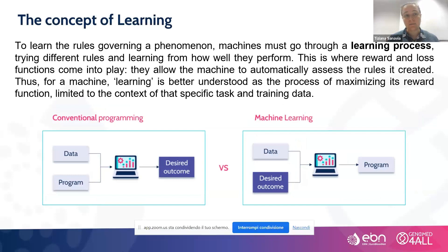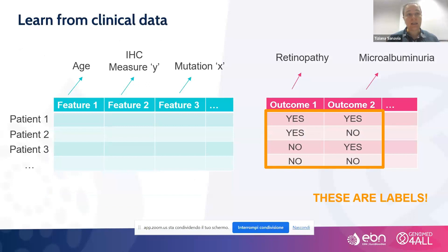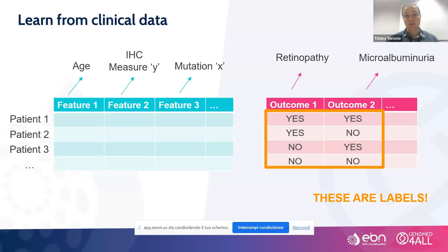In order to address this task, we have to prepare the data — in our case, clinical data — in a suitable way that can be exploited by machine learning algorithms. We have information from each patient and we distinguish two categories of clinical variables. On one side, we have the features used by the model to build the rule. On the other side, we have what we call the outcome — for example, a specific clinical event describing the prognosis of the patient — and each outcome has a label, such as whether the event happened or not.